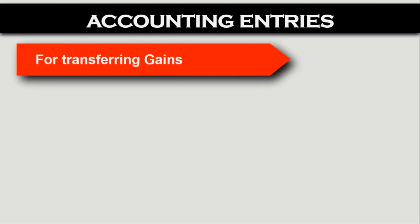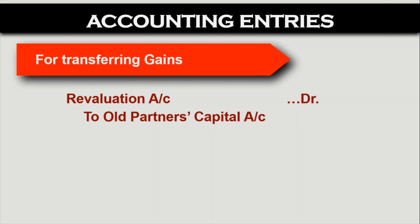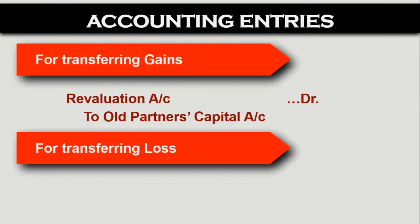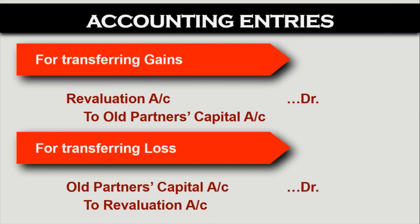Just find out the balancing figure. If we get gains — meaning our amounts of profits are more than the amounts of losses, and gains have credit balance — it means our revaluation account has a credit balance. So to transfer it, we will debit the revaluation account and transfer the amounts to old partners' capital accounts in their old profit sharing ratio. Similarly, for transferring losses, the revaluation has debit balance, so we will credit the revaluation account and debit old partners' capital account. That's it for the entries.